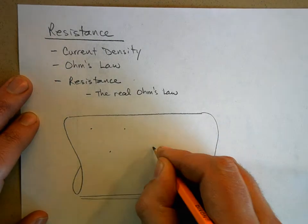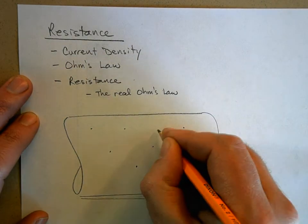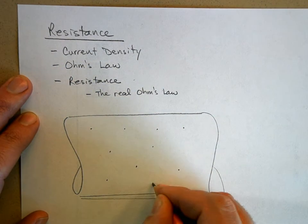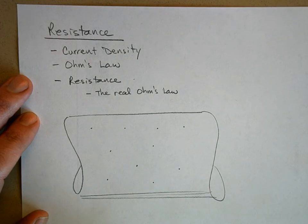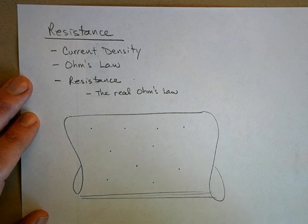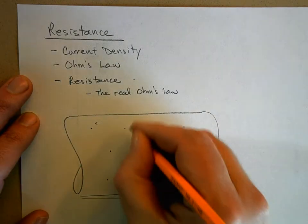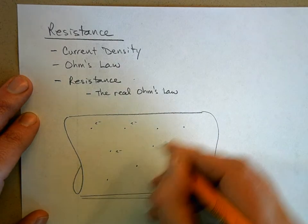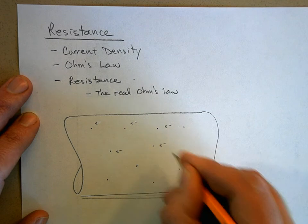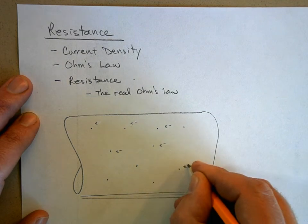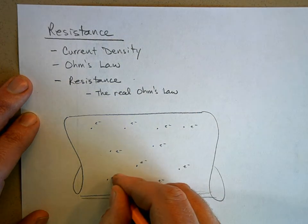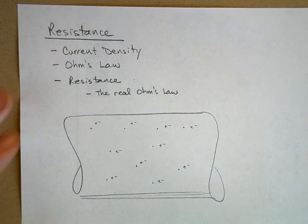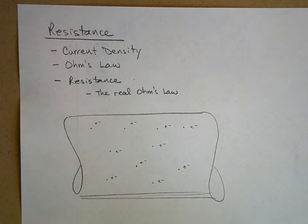I'm going to draw a few representative atoms in here. These little dots represent the nuclei of — let's say — copper atoms. And then surrounding these are free-moving electrons. For copper, it turns out that each copper atom has one valence electron that's free to move about the metal.